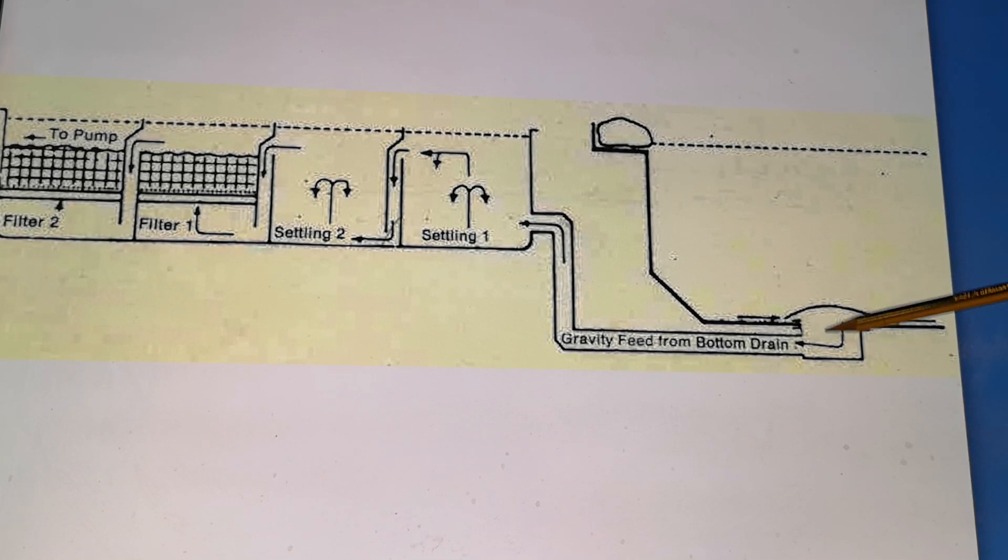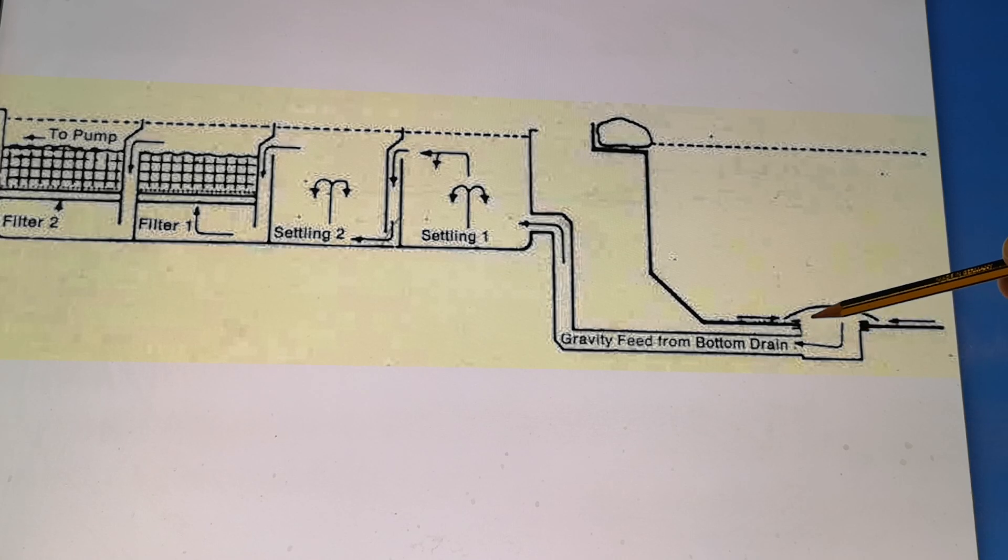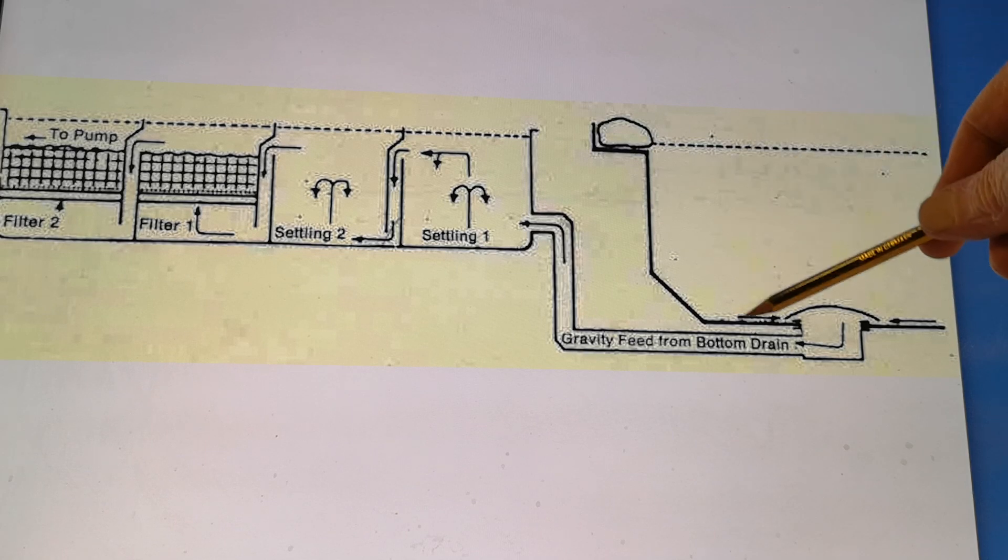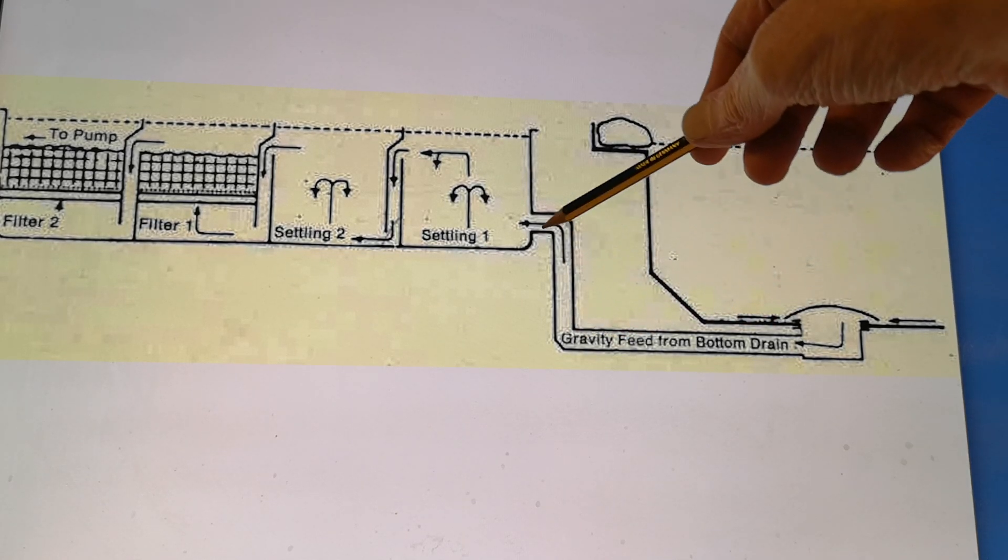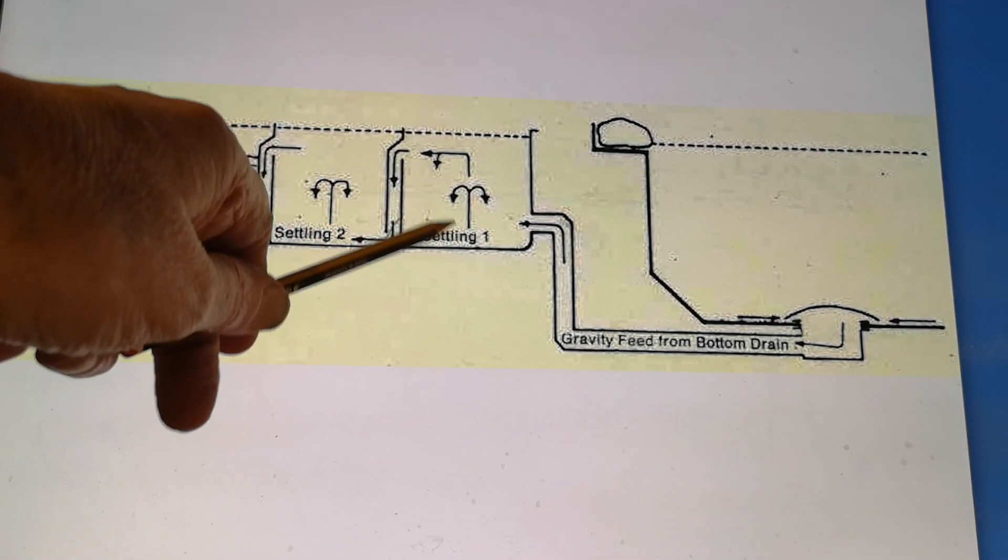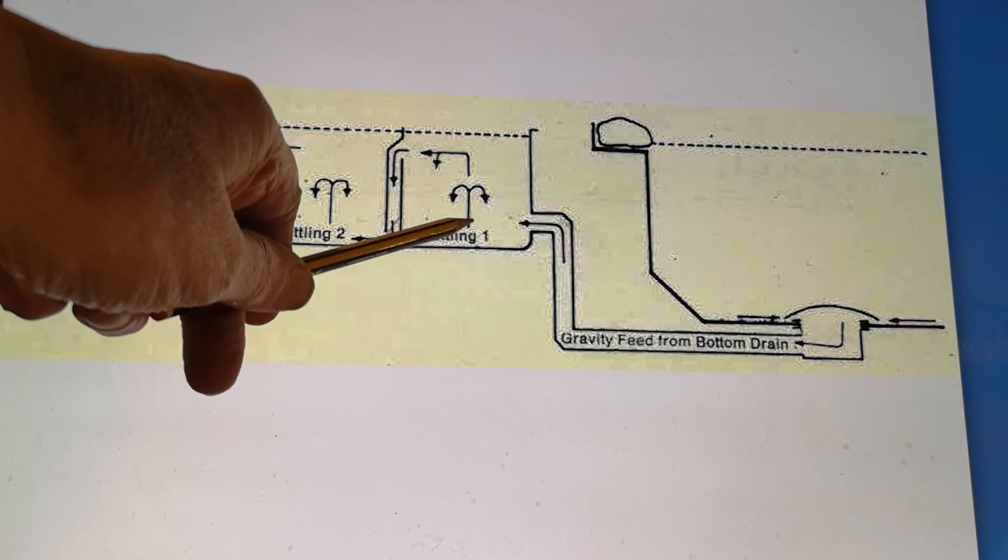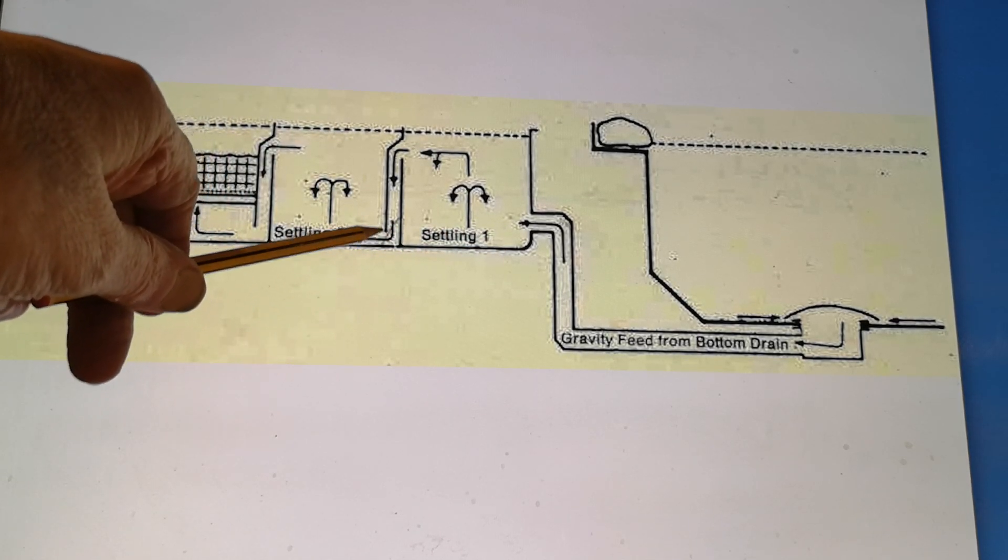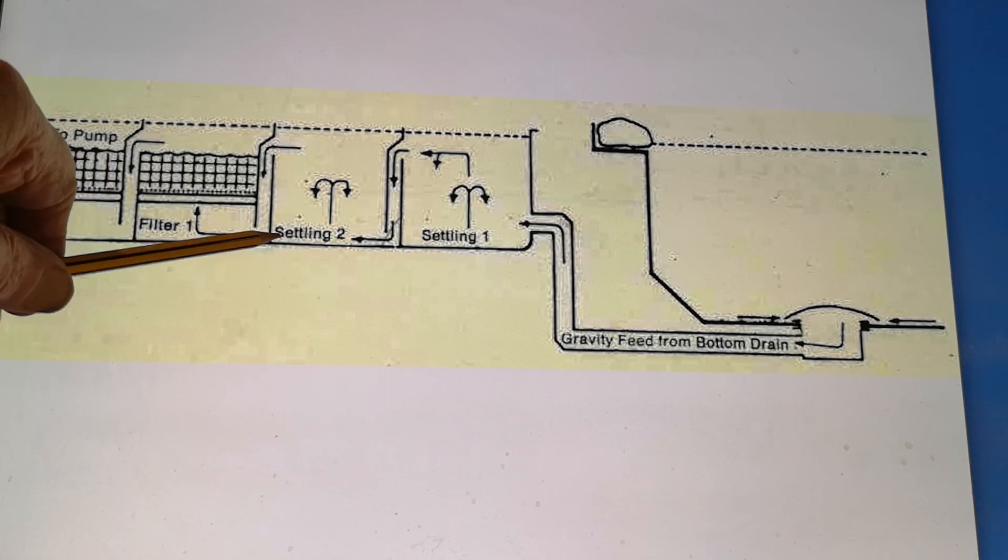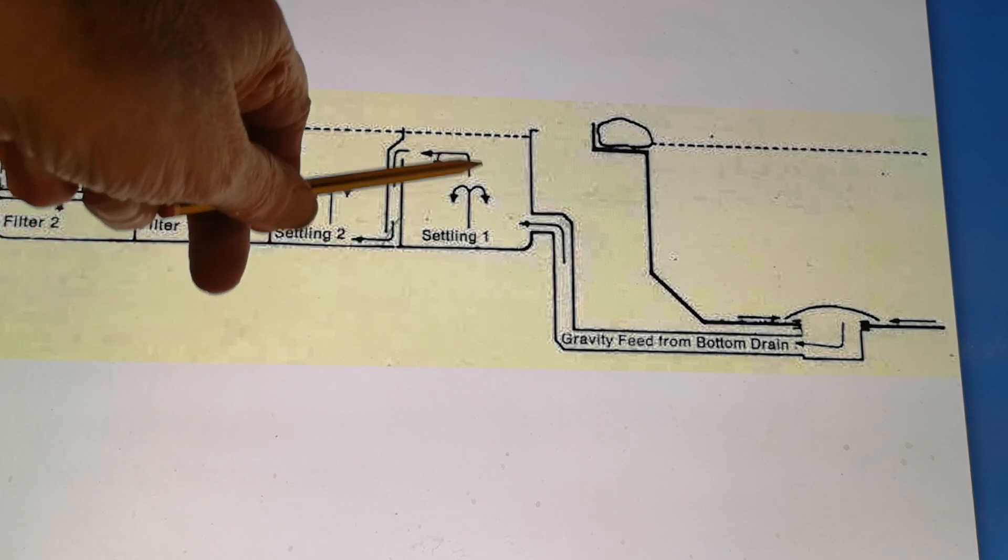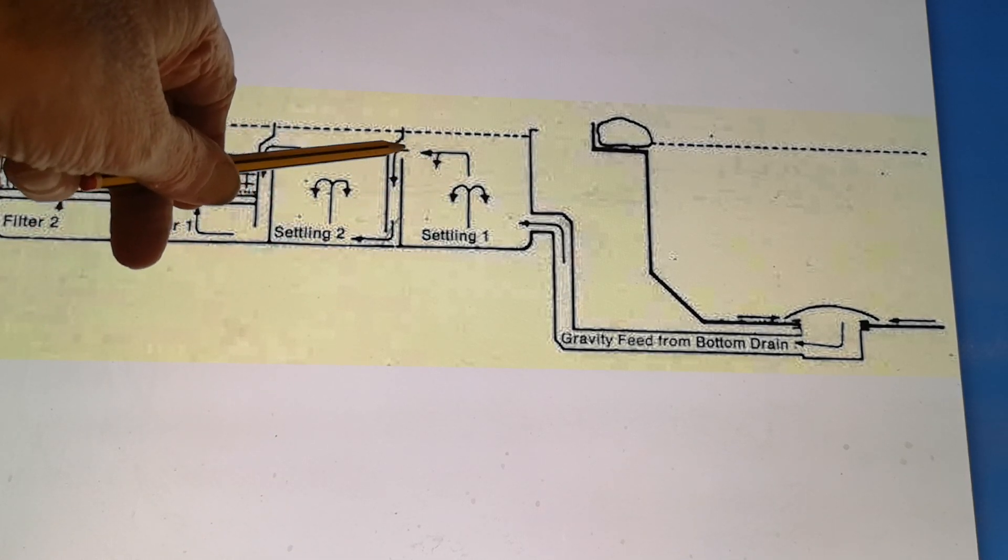This shows an original sketch I made where you can see that water comes from the bottom drain and feeds by gravity up into the first settling chamber. You see the arrows - I've got settling one, settling two - these are transfer ports that transfer the water from the top of settling one into the bottom of settling two.